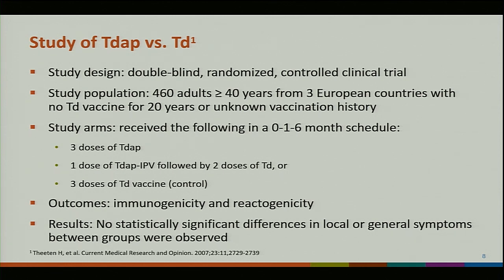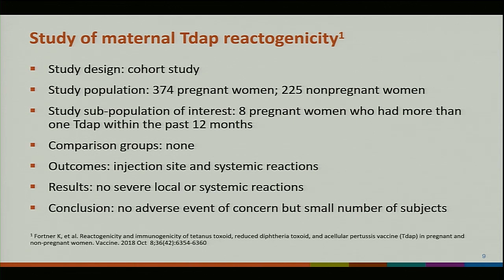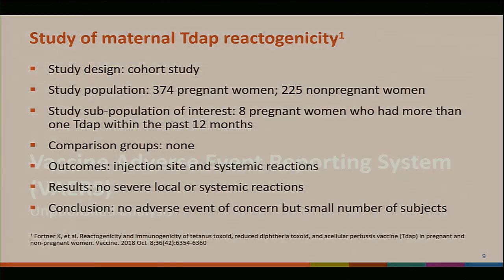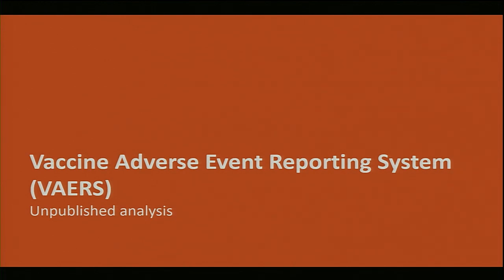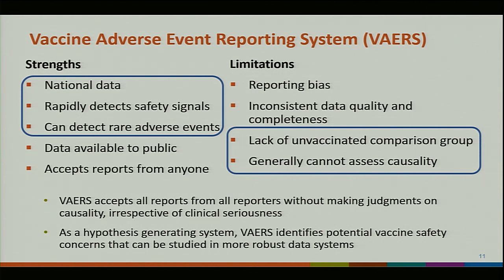A second study is a cohort study of maternal Tdap reactogenicity with 374 pregnant women and 225 non-pregnant women. The subpopulation of interest were eight pregnant women who had more than one Tdap within the past 12 months. The outcomes were injection site and systemic reactions. None of the women had any severe local or systemic reactions. Regarding unpublished VAERS analysis, I want to point out that VAERS is a national passive surveillance system co-managed by CDC and the FDA. Its strengths include being a national system that can rapidly detect safety signals and rare adverse events. Its limitations include lack of an unvaccinated comparison group, no denominator to calculate incidence, and inability to assess causality.